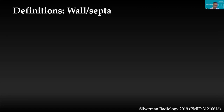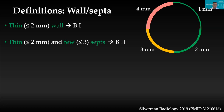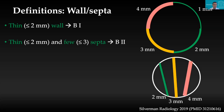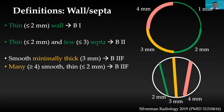Understanding the basic definitions: a thin wall is up to 2 mm — that is Bosniak type I. A thin, smooth wall with a few thin septa (few = less than 3, thin = up to 2 mm) is type II. If you see minimally thick wall or septa (around 3 mm), or if you see many thin septa (4 or more), that is 2F. A thick wall or septation of 4 mm or more is Bosniak type III. For lesions to be type II, IIF, or III, they must enhance — defined as attenuation increase of ≥20 HU or more than 15% increase in signal.